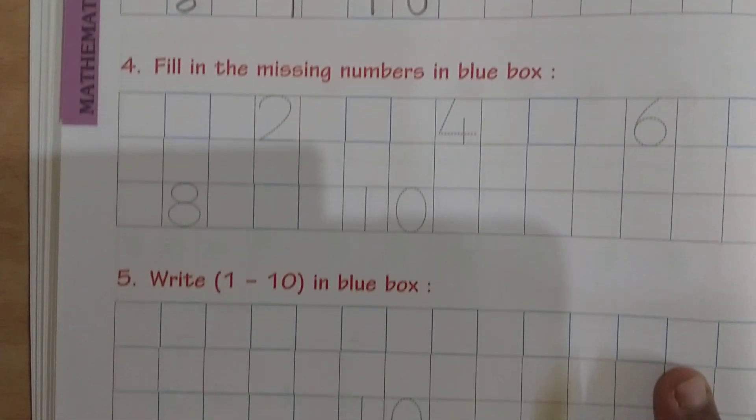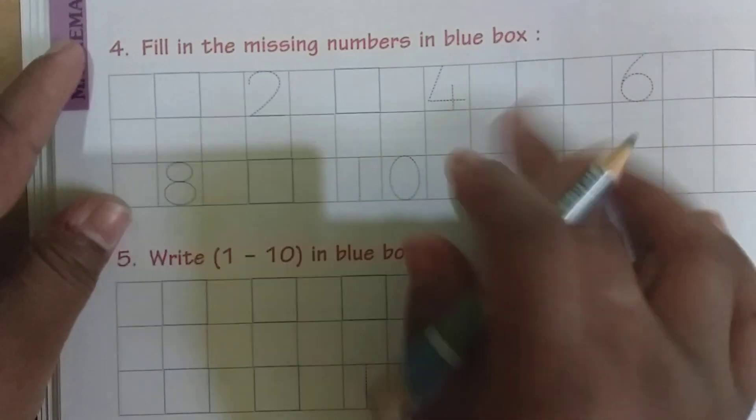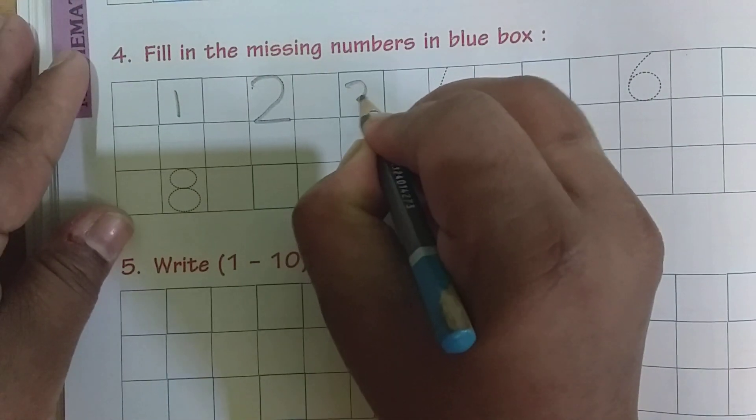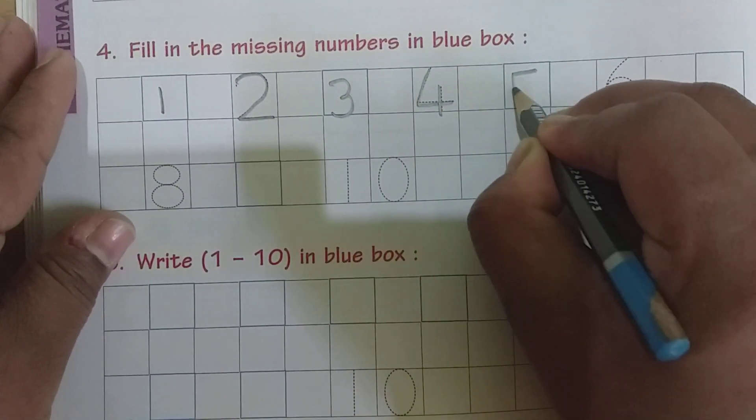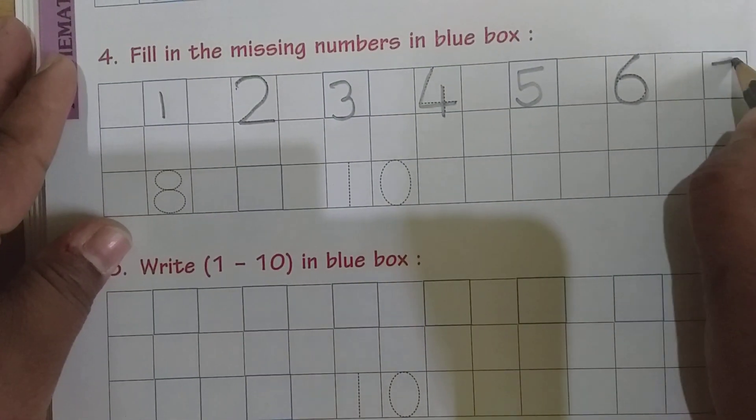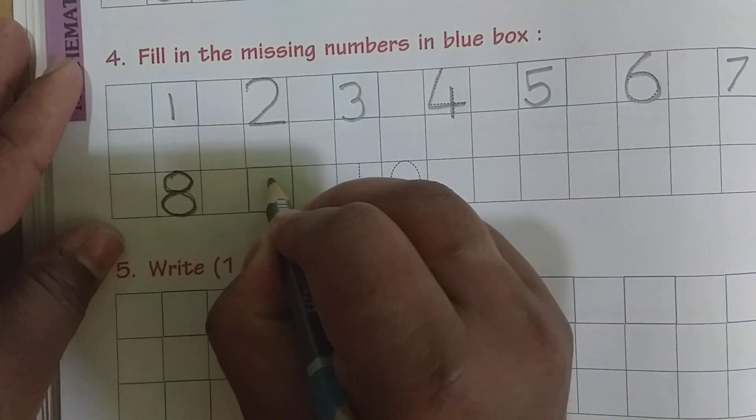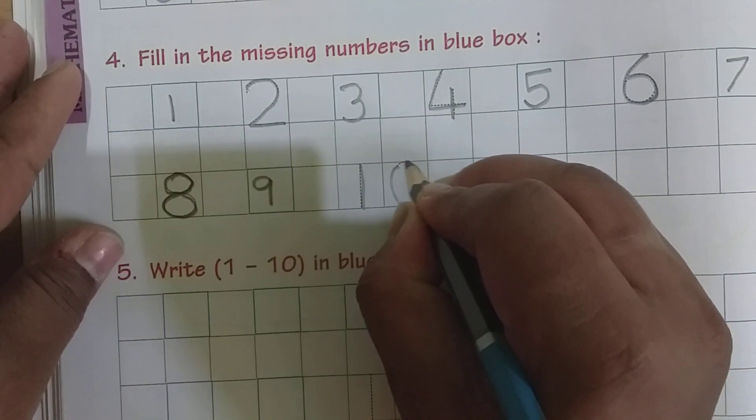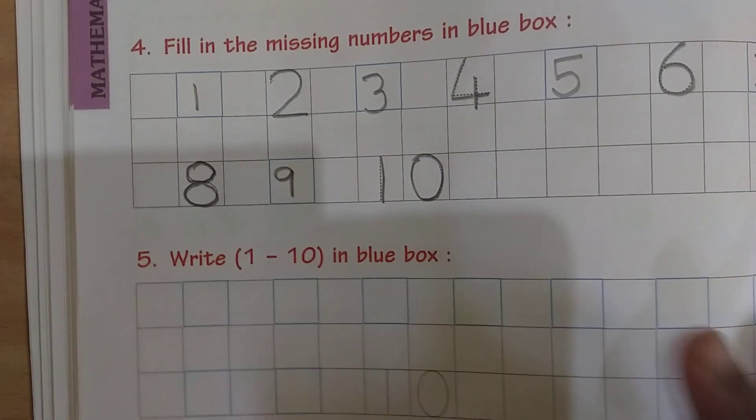Fill in the missing numbers in blue box. See, fill in the missing numbers in blue box. See, 1, 2, 3, 4, 5, 6, 7, 7, 8, 9 and 1, 0, 10. See, like this we have written the missing numbers. Now we will see.